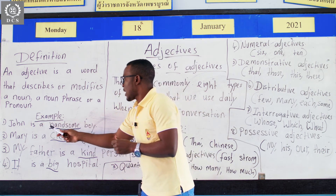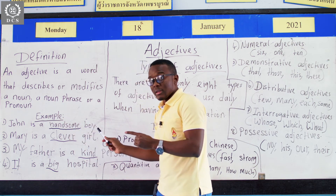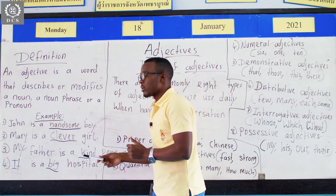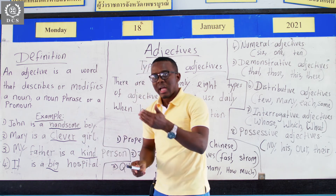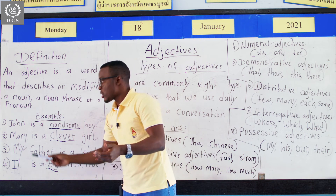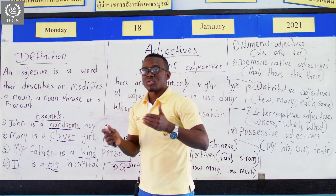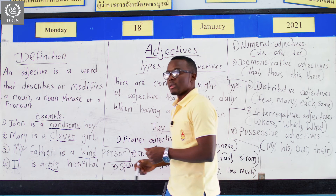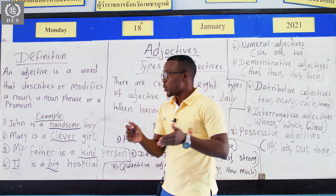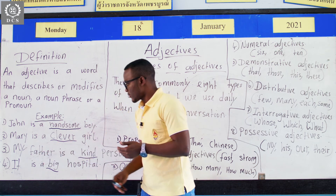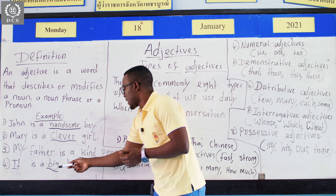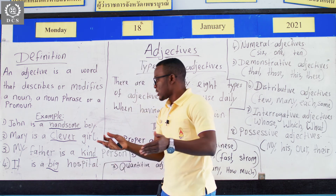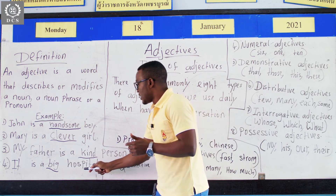John is a handsome boy — handsome here is an adjective; it helps to describe John. Mary is a clever girl — clever here is an adjective; it helps us understand more about Mary and tells us that Mary is clever. My father is a kind person — kind is an adjective used to describe my father. It is a big hospital — big here is an adjective which we use to describe this hospital.